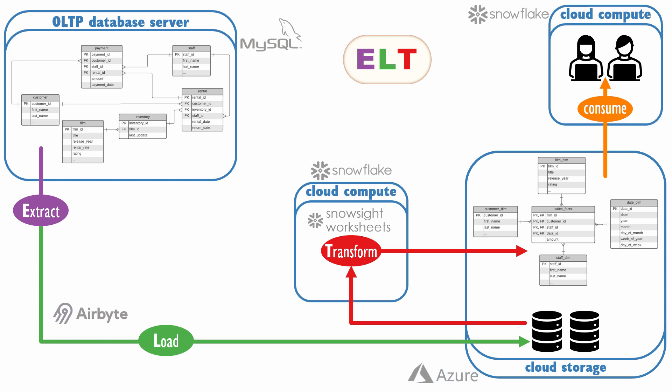Something you may have noticed is that since the raw data is stored in Snowflake tables, you could just perform the transformations via SQL SELECT statements within Snowflake's own SnowSight user interface. So why would you use an additional tool like DBT?